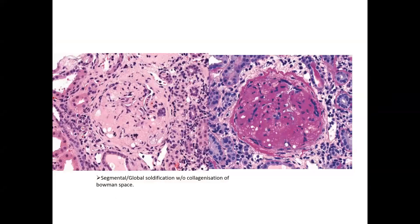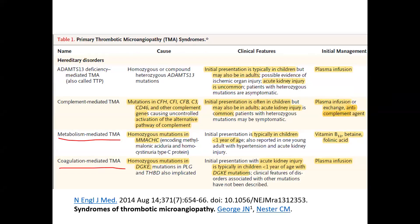These are the broad morphological changes of thrombotic microangiopathy and hypertension. Apart from the two flagship diseases, TMA can also occur due to metabolic derangement — homozygous mutation in methylmalonic aciduria and homocysteinuria type C protein (MMACHC). This metabolism-mediated TMA usually occurs in children less than one year of age, and is occasionally reported in adults with hypertension and acute kidney injury. Coagulation-mediated TMA can also occur due to homozygous mutation in diacylglycerol kinase epsilon (DGKE).